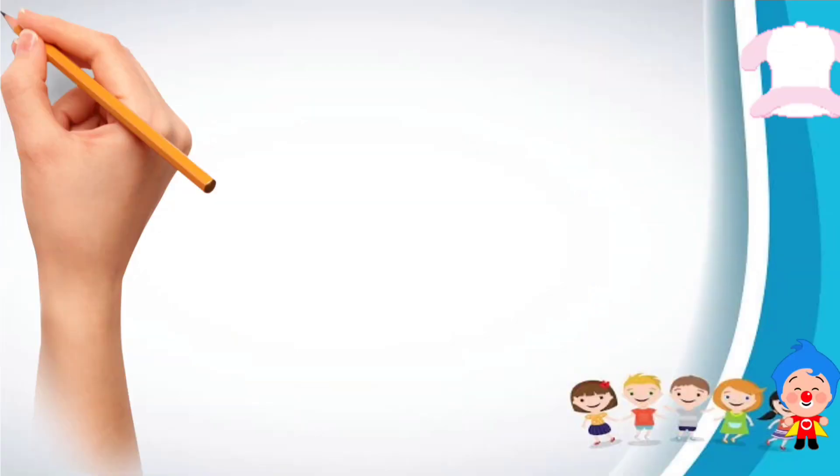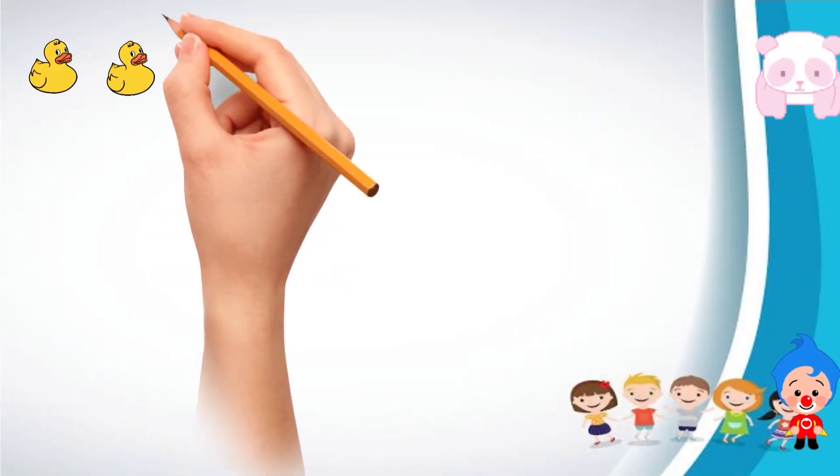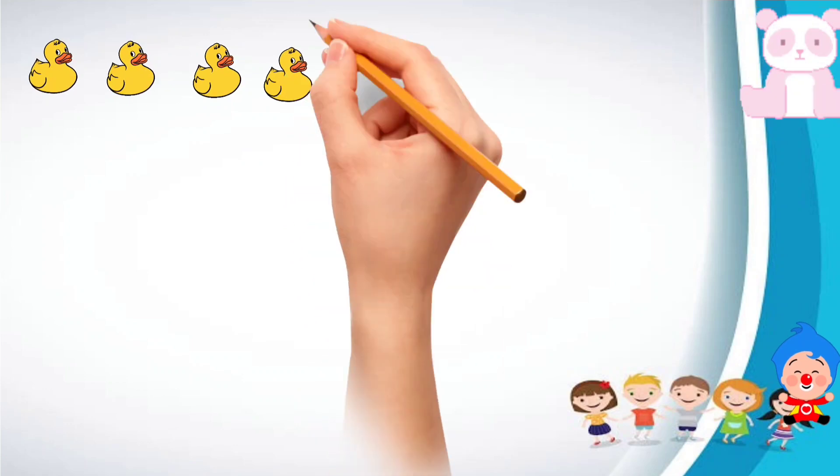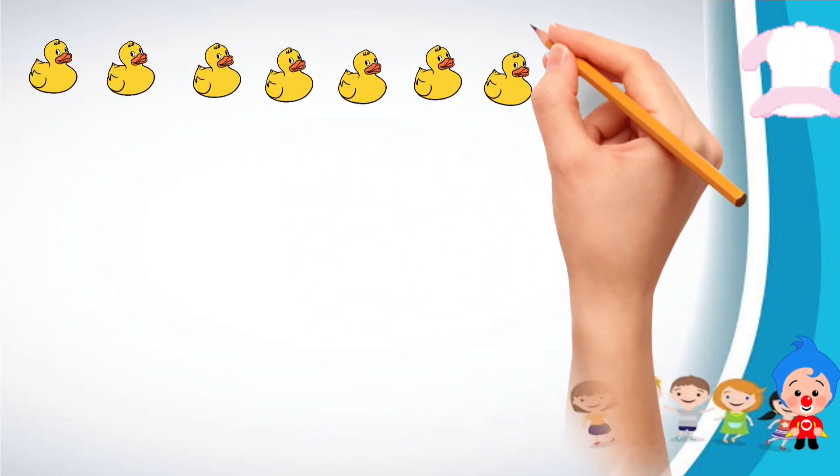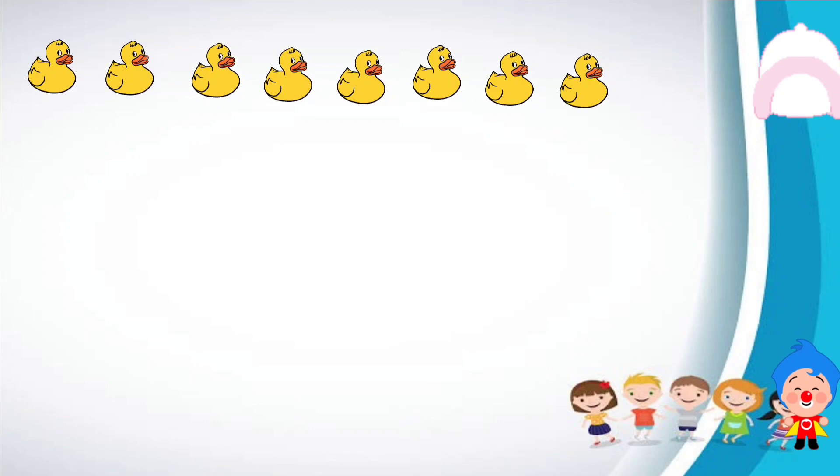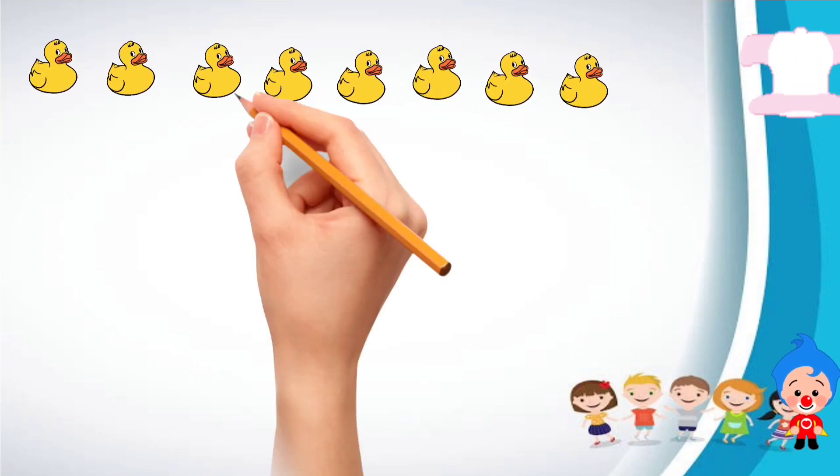For example, there are eight dogs. One, two, three, four, five, six, seven, eight. Eight dogs. Now let us split and make pairs.